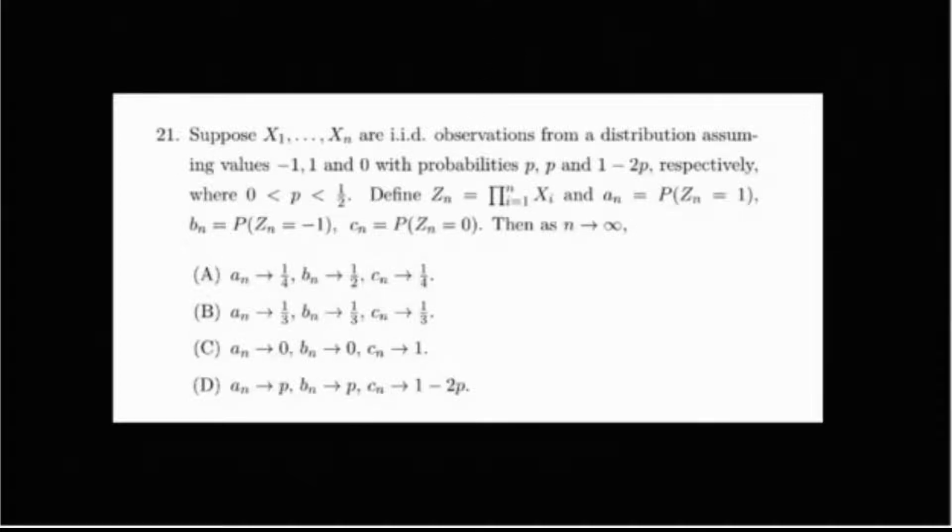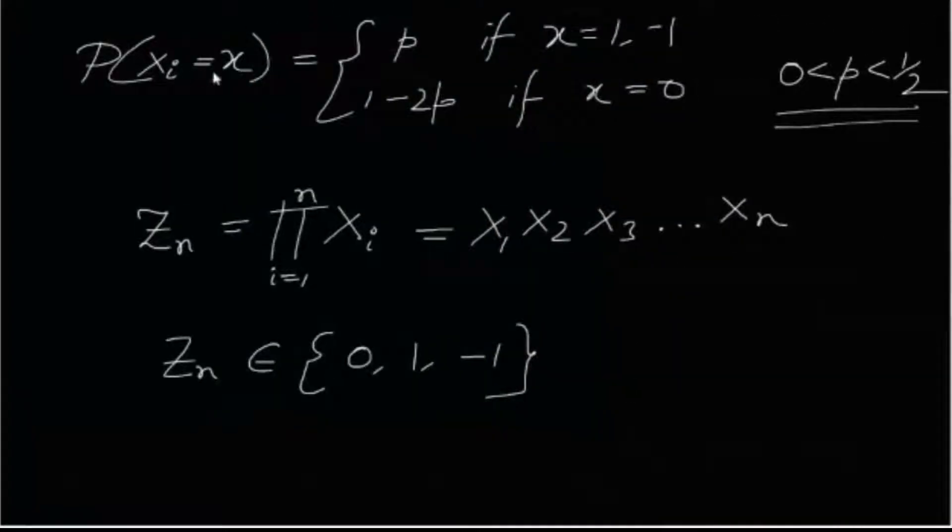So basically it means that probability xi equals to x is p if x is equal to 1 or minus 1 and 1-2p if x is equal to 0. So we have the pmf of xi and xi is iid.